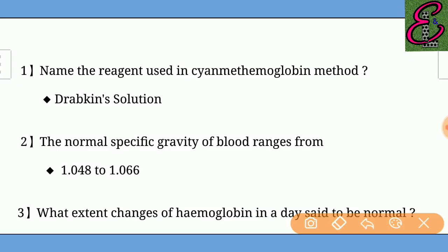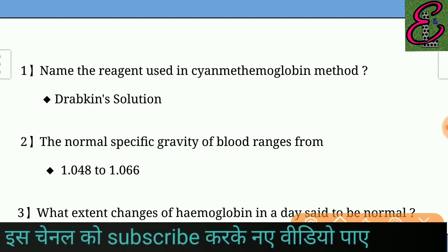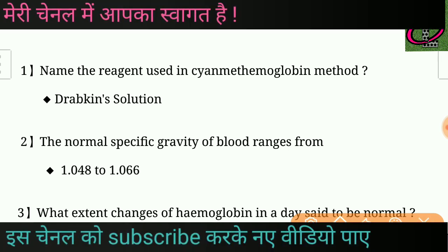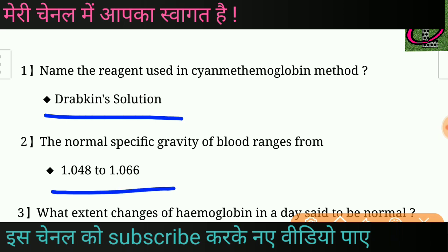Question number one: Name the reagent used in the cyanmethemoglobin method. Answer: Drabkin's solution. Question number two: The normal specific gravity of blood ranges from — answer: 1.048 to 1.066.